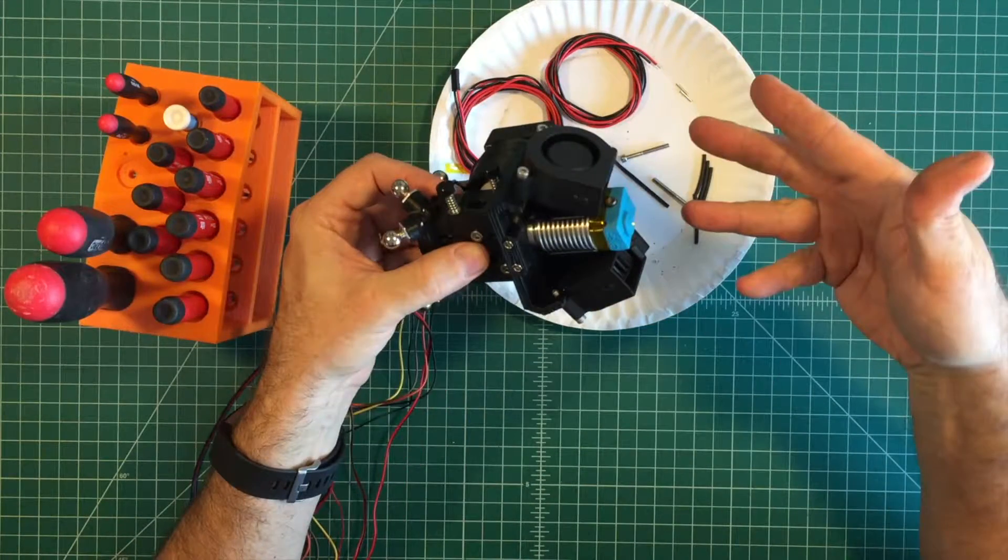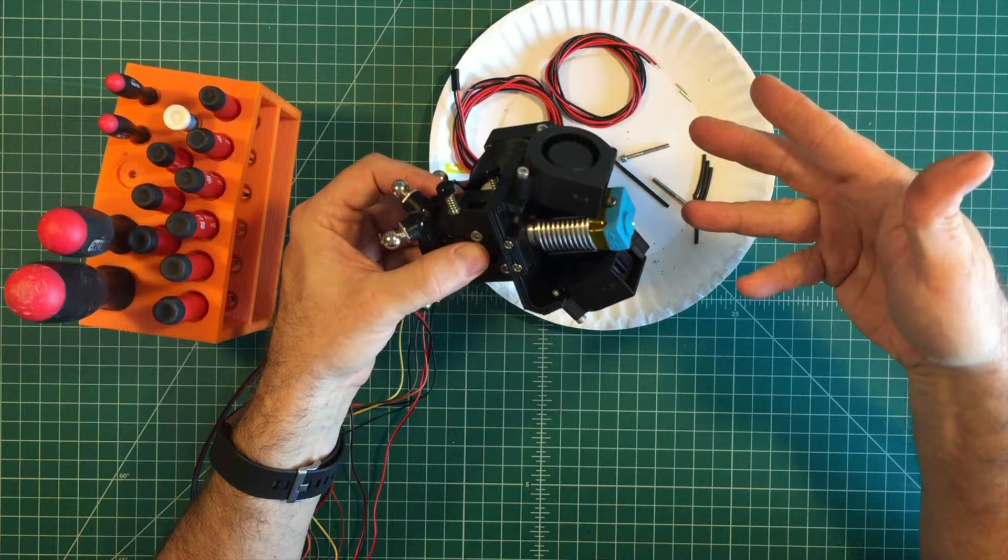Per E3D's instructions, it is critical that you heat the hotend to temperature. Tighten the nozzle while holding the heater block with a spanner. This will tighten the nozzle against the heat break and ensure that your hotend does not leak.